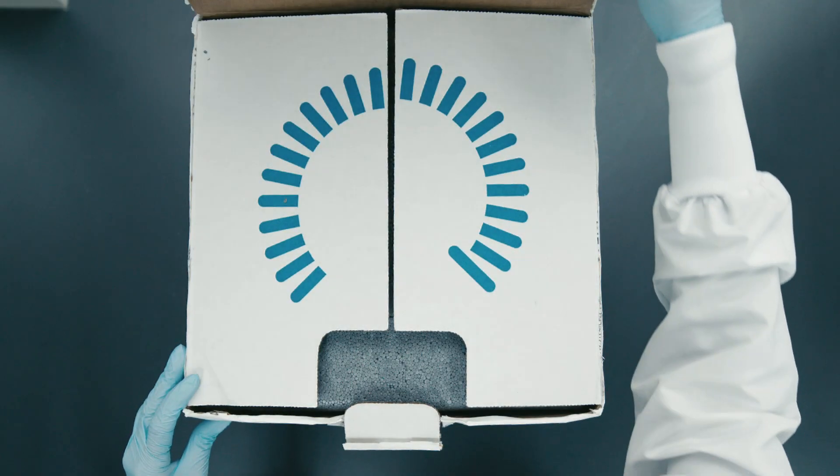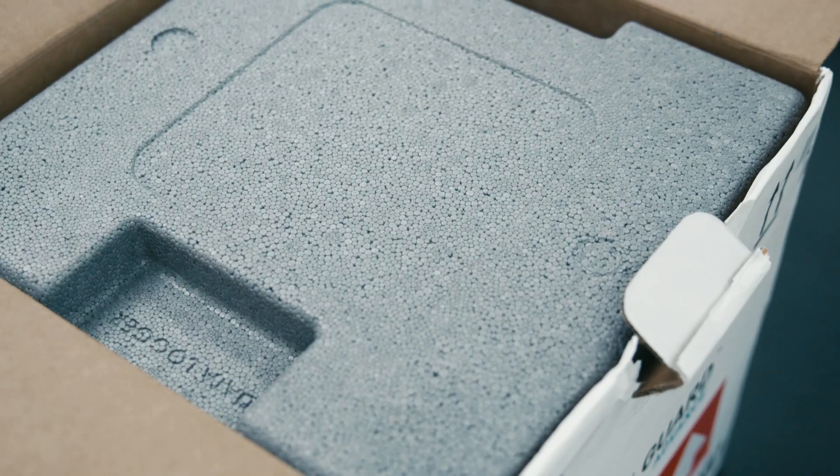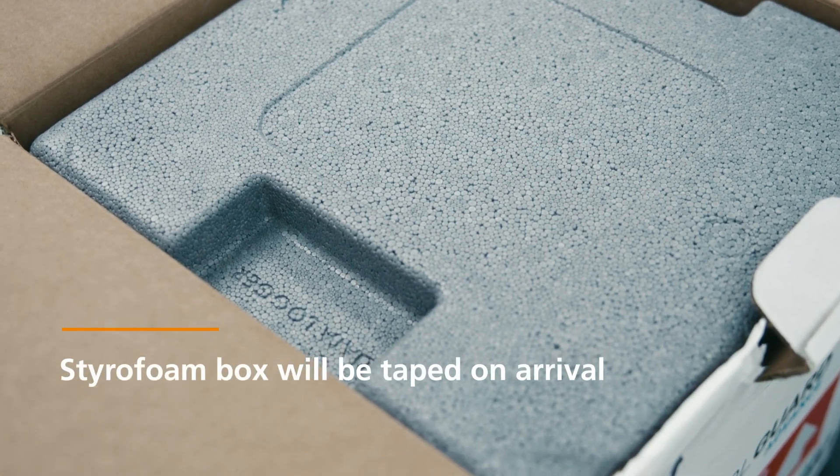Inside the cardboard box, you will find a CoolGuard box. This box is specifically designed to ensure that neural organoids remain at a stable temperature during shipment.